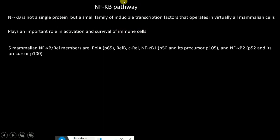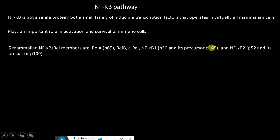Since NF-κB is not a single protein, in mammalian cells there are five NF-κB REL members: REL-A or P65, REL-B, c-REL, NF-κB1 also called P50 and its precursor P105, and NF-κB2 which is P52 and its precursor P100.